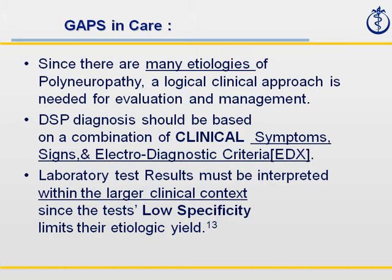The problem neurologists see is a gap in care — there are many causes for polyneuropathy, meaning damage to nerves in more than one limb. The best way to fill that knowledge gap is a logical approach to evaluating patients. In neurology, we emphasize clinical symptoms — what the patient complains of — clinical signs — what the physician finds — and then the appropriate electrodiagnostic criteria. For peripheral neuropathy, that tends to be EMG studies as well as nerve conduction studies.